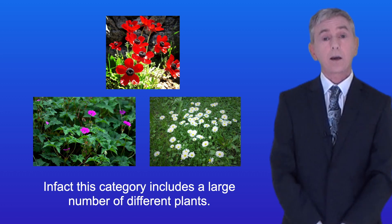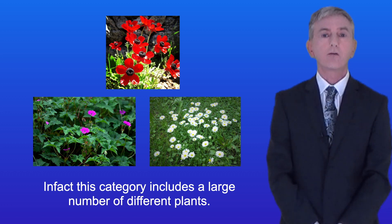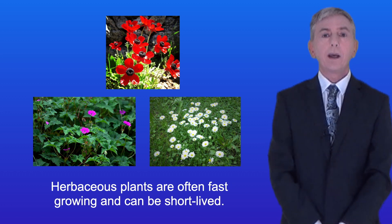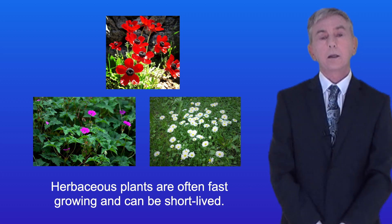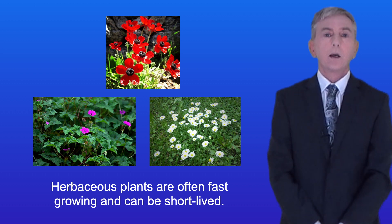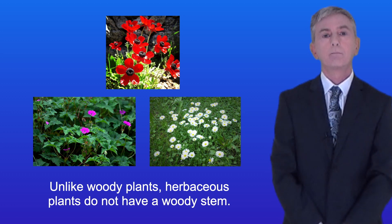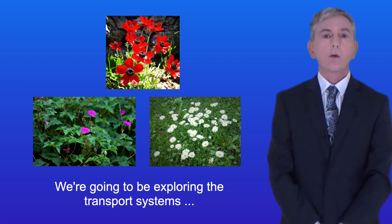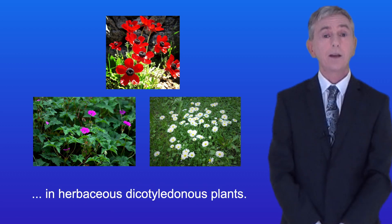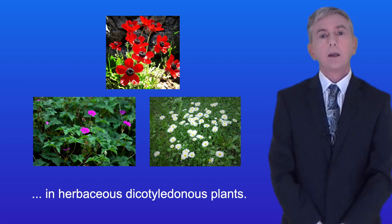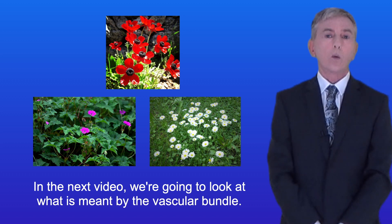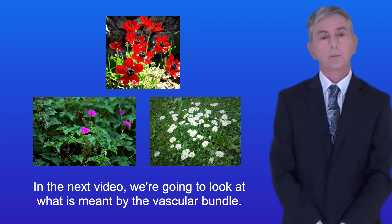In contrast geraniums are examples of herbaceous dicotyledonous plants, and in fact this category includes a large number of different plants. Herbaceous plants are often fast-growing and can be short-lived, and unlike woody plants, herbaceous plants do not have a woody stem. So we're going to be exploring the transport systems in herbaceous dicotyledonous plants. In the next video we're going to look at what's meant by the vascular bundle.